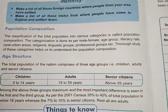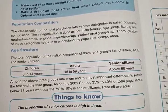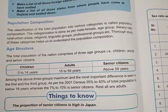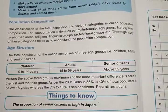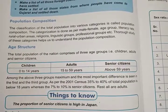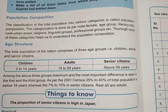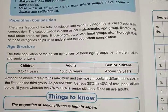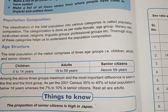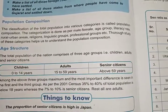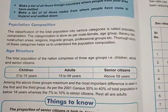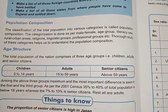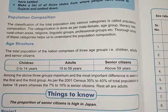Next we have population composition. The classification of total population into various categories is known as population composition. We have categories such as male and female basis, age group, literacy rate, rural or urban, religion, linguistic group, and professional group. The study of these categories helps us understand the population composition.